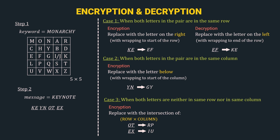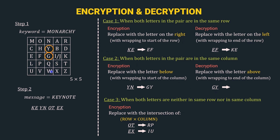Case 2 decryption: both letters in the pair are in the same column. We replace with the letter above, wrapping to the end of the column if needed. In encryption we go below; in decryption we go above. Taking diagram GY — G and Y are in the same column. G is replaced by the letter above it — Y — and Y is replaced by the letter above it — N. So GY decrypts to YN.